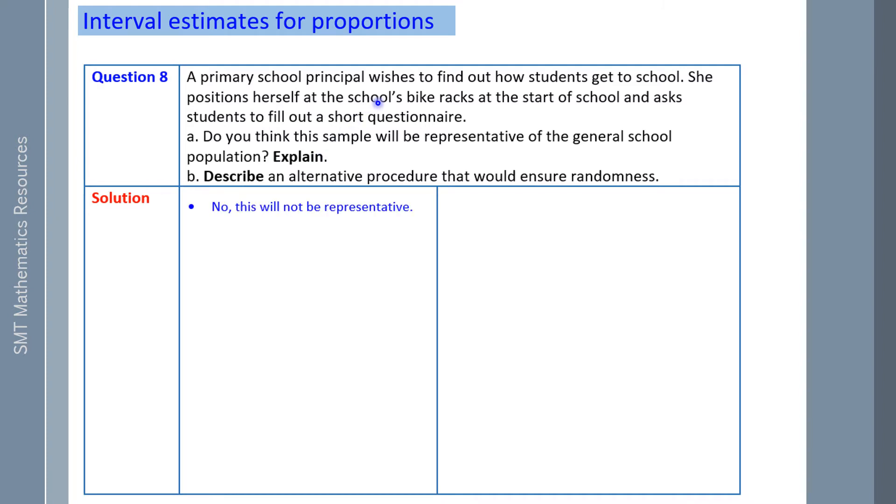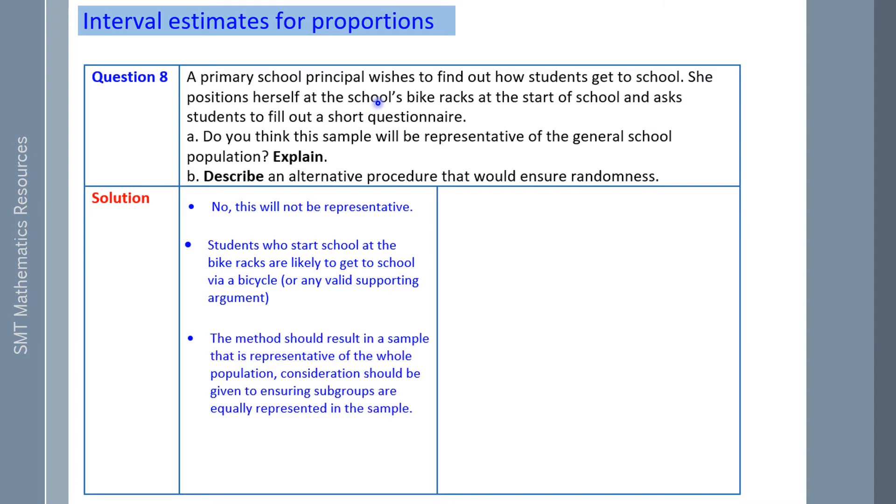No, this will not be representative. The students who start school at the bike racks are likely to get to school via a bicycle. It's not going to be representative because you basically picked a spot where people are most likely going to be riding a bike. The method should result in a sample that is representative of the whole school population. Consideration should be given to ensuring subgroups are equally represented in the sample, which we haven't done so.